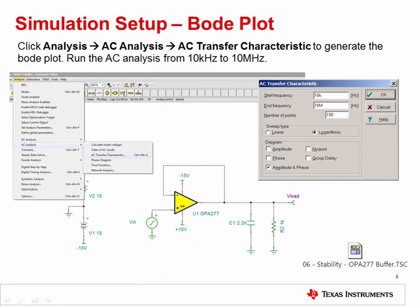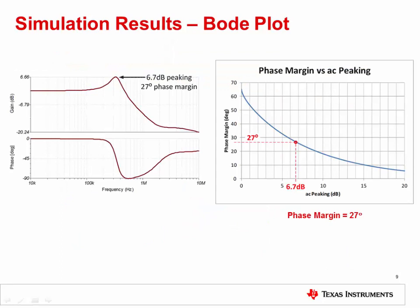Use the simulated percentage overshoot of 40% to calculate the phase margin, which comes out to 31 degrees. Next, run a SPICE simulation analysis for the AC transfer characteristic. This will allow us to see the op amp's AC peaking, which is another indicator of phase margin. Use the same TINA-TI simulation schematic as before. To run the analysis, click Analysis, then AC Analysis, then AC Transfer Characteristic. Run the analysis from 10 kilohertz to 10 megahertz. You should see a result similar to this. The 6.7 dB of peaking results in a phase margin of approximately 27 degrees.